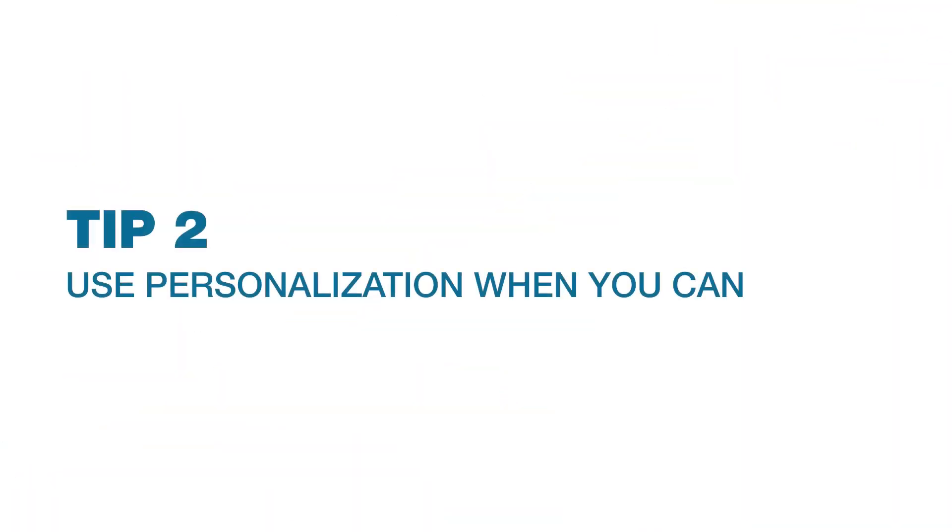The second crucial tip is to use personalization when you can. Getting your LinkedIn profile to automate content can save loads of time and help your business run more efficiently. However, it's also a good idea to use personalization as much as possible. To enhance safety on LinkedIn, personalize your connection requests and messages. Plus, it's much better for building and maintaining a genuine relationship with your prospects and clients.